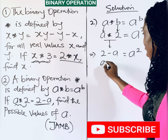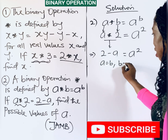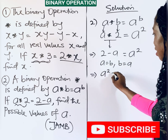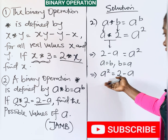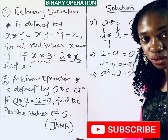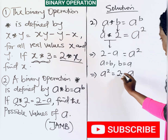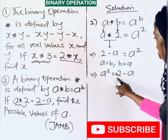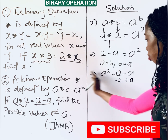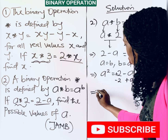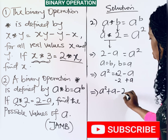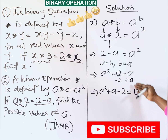Since a squared equals 2 minus a, we rearrange to form a quadratic equation. Moving all terms to one side gives a squared plus a minus 2 equals 0, because subtracting 2 minus a from both sides makes the right side zero.